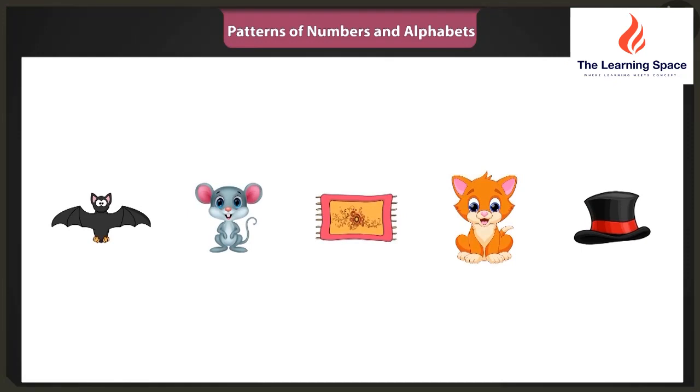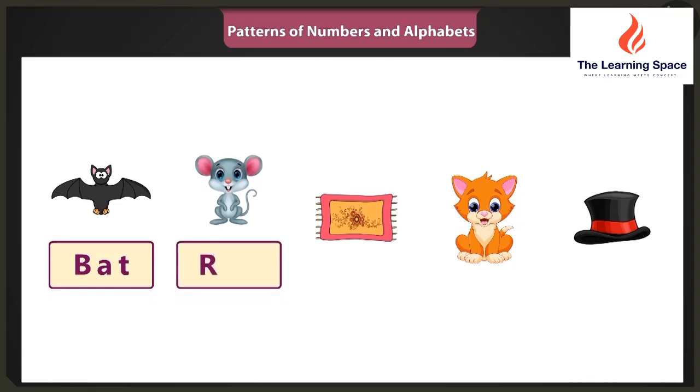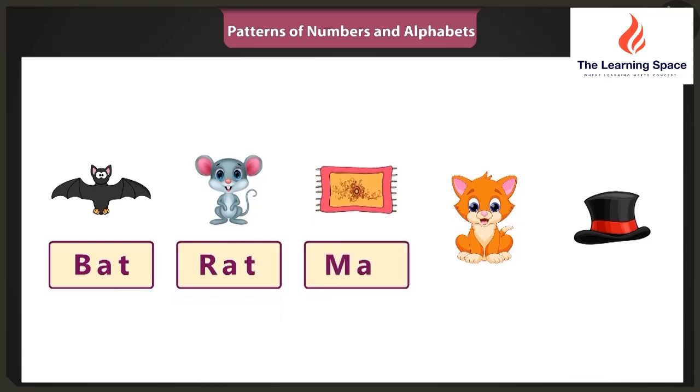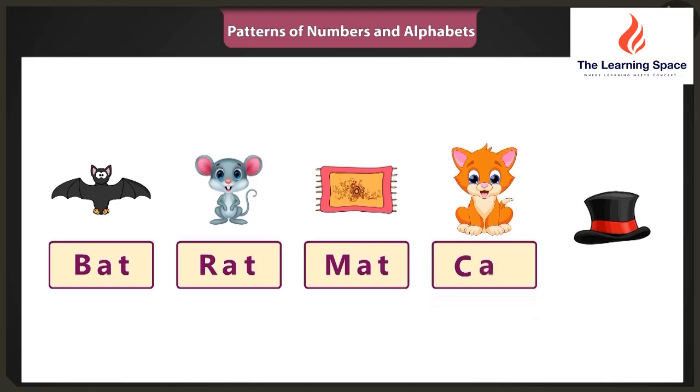Yes. This is B-A-T Bat. And this one is R-A-T Rat. And this one is M-A-T Mat. And this is C-A-T Cat. And this one is H-A-T Hat. Wow, Binnie, you have named all of them. Come on, now tell me, do you see any pattern in this?